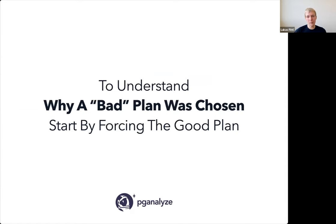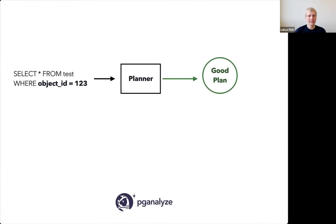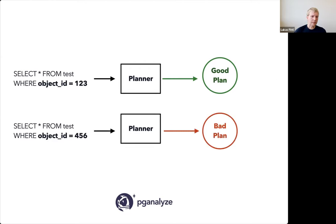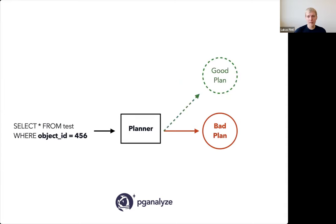What I mean by forcing the good plan is: suppose we have object IDs v1 through v3 sent to the planner. We get the good plan with a total cost of 250, and theoretically there's also a bad plan with cost 300 — we're happy with that. But with another object ID, say 4, 5, or 6, the planner because of selectivity estimates produces the bad plan. Theoretically the good plan was still available — it was one of the options — but the planner chose the bad plan because the cost looked more interesting. What often happens in these situations is that the cost estimates are wrong.